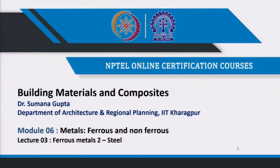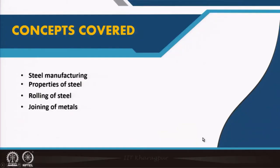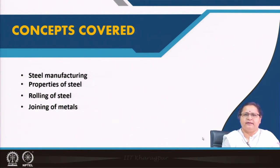Hello everybody. Today we will start lecture 3 of module 6. We have already covered, after the introduction, cast iron and wrought iron, and we said we will carry on with ferrous metals, particularly steel, which we are presently using in the building industry quite extensively. The items covered in this lecture are: manufacturing of steel, briefly on the properties of steel, rolling of steel, and joining of metals — particularly steel.